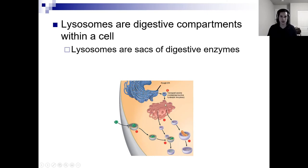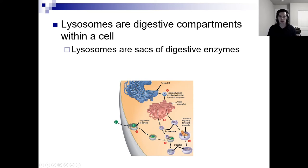Transport vesicle containing inactive hydrolytic enzymes goes to the Golgi, where they become activated lysosomes. Engulfing of a particle leads to digestion. Lysosome engulfing damaged organelles — if something gets damaged in your cell, just recycle it, use its parts.